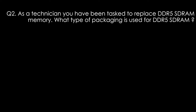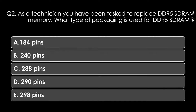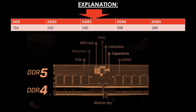Question two. As a technician you have been tasked to replace DDR5-SDRAM memory. What type of packaging is used for DDR5-SDRAM? Options: A: 184 pins, B: 240 pins, C: 288 pins, D: 290 pins, or E: 298 pins. The right answer is C, 288 pins. DDR has 184 pins, DDR2 and DDR3 both have 240 pins, and the newest DDR4 and DDR5 both have 288 pins. Note this applies to a PC, not a laptop.